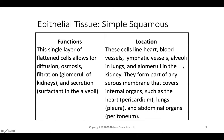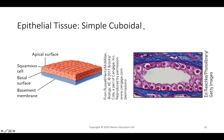Simple squamous epithelial cells line the heart, blood vessels, lymphatic tissue, alveoli, and glomeruli. They form the serous membranes coating internal organs: the pericardium around the heart, the pleura around the lungs, and the peritoneum around the abdominal organs.